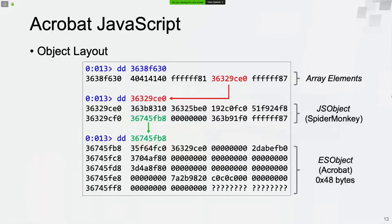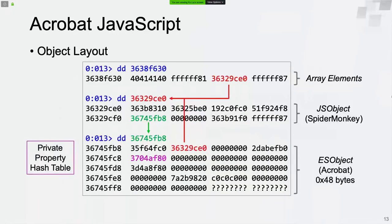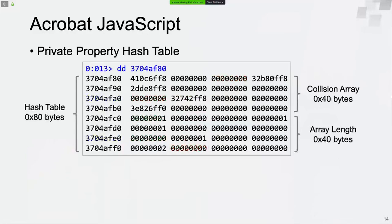The ES object is allocated on system heap with size 0x48 bytes. There is also a pointer in the ES object which points back to the JS object. What we are interested in is the pointer that points to the private property hash table. The size of the private property hash table is 0x80 bytes — the first 0x40 bytes stores the condition array objects and the second 0x40 bytes stores the corresponding array length values.